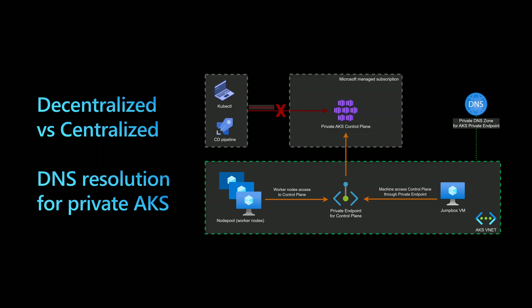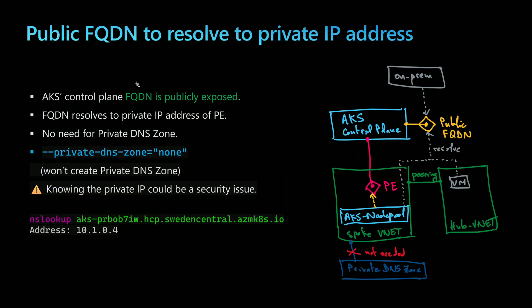The second actor would be a Jumpbox virtual machine that could be deployed either in the cluster virtual network or coming from on-premise virtual networks if they are connected to the Azure virtual networks. The third actor would be the CI/CD pipelines that will perform kubectl or helm operations in order to deploy applications into the AKS cluster. So we'll be exploring three solutions.